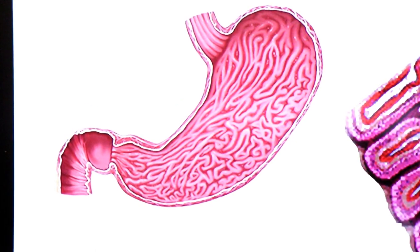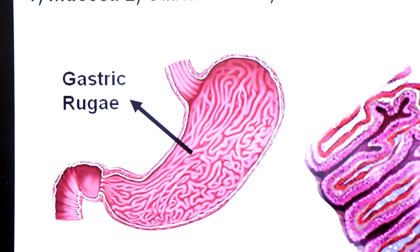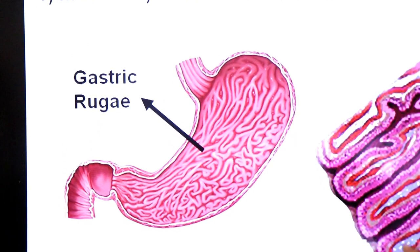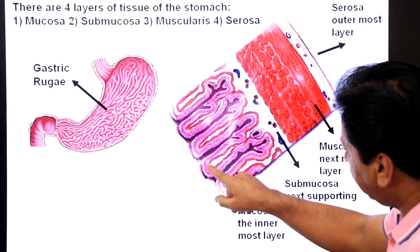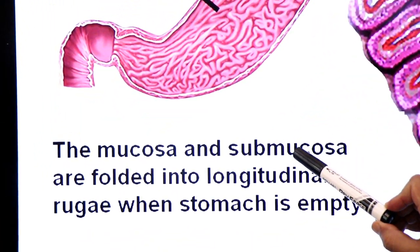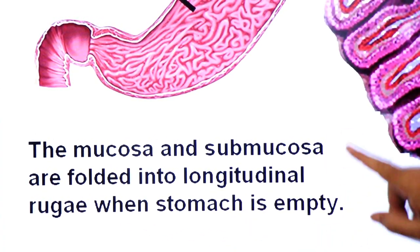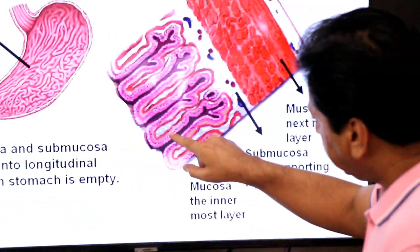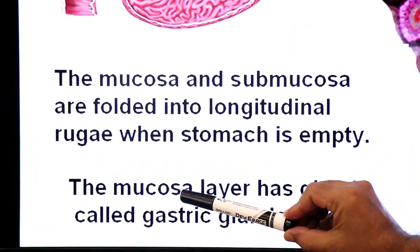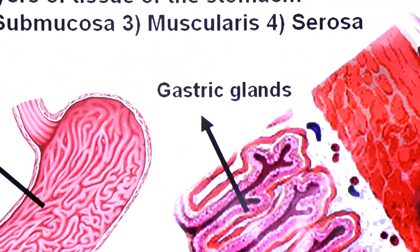We discussed rugae — the folds in the wall of the stomach. The mucosa and sub-mucosa are folded into longitudinal rugae when the stomach is empty. In these folds, gastric glands are found in the mucosa layer. The surface epithelium of the mucosa invaginates to form pits called gastric pits. Surface mucus cells form numerous tiny invaginations or holes called gastric pits. The mucosa layer has glands called gastric glands.